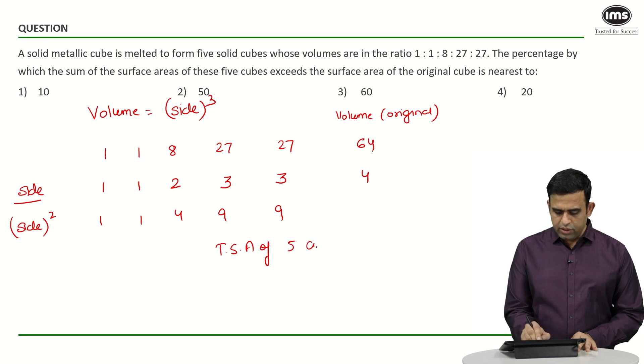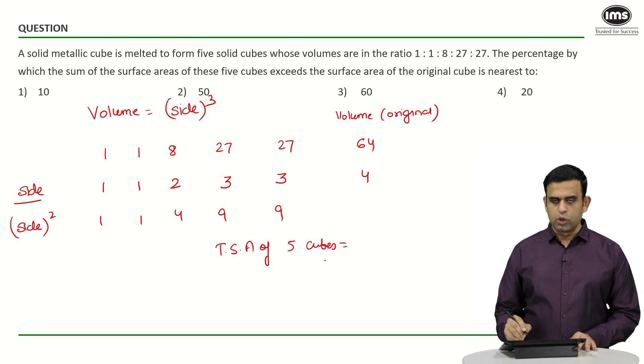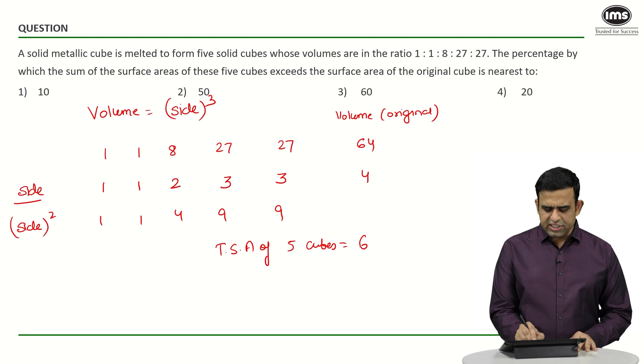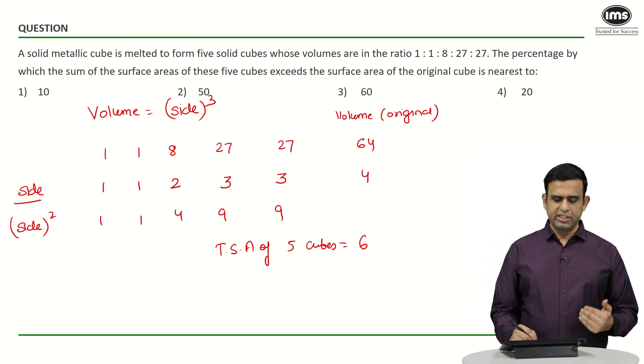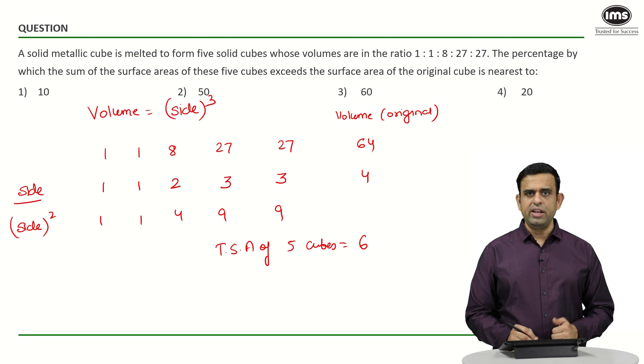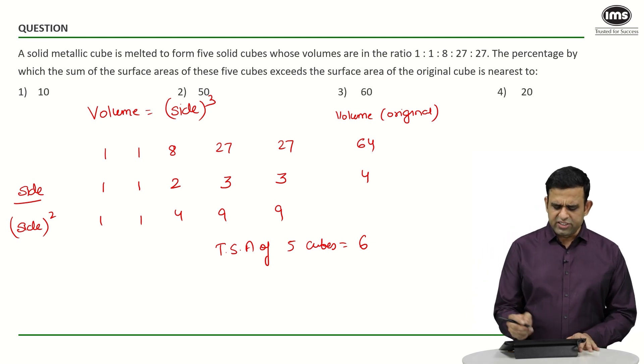of the 5 cubes will be 6 times side squared. So 6×1 + 6×1 + 6×4 + 6×9 + 6×9. Taking 6 common: 1+1+4+9+9 = 24.